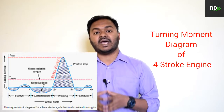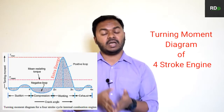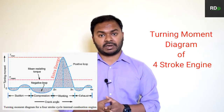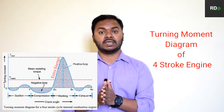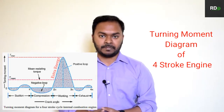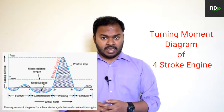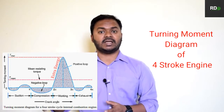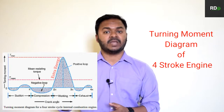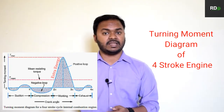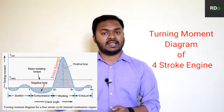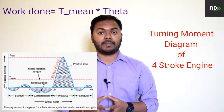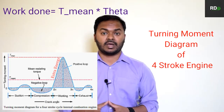The turning moment diagram is defined as the area under the torque or turning moment and the angle of rotation of the crankshaft, which represents the energy stored or released by the flywheel. There are four strokes shown: the first is suction, the second is compression, the third is the power or expansion stroke, and the fourth is the exhaust stroke.